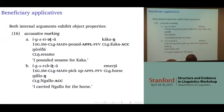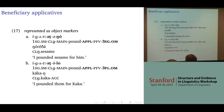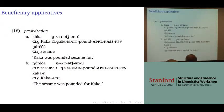Both of these internal argument objects can exhibit object properties: accusative marking in 16a and 16b, represented as object markers in 17, and finally passivization in 18.